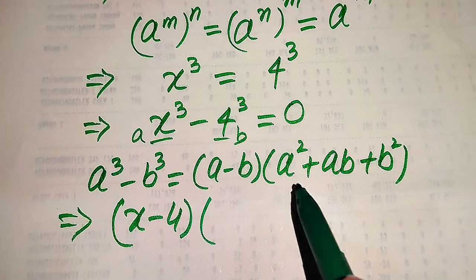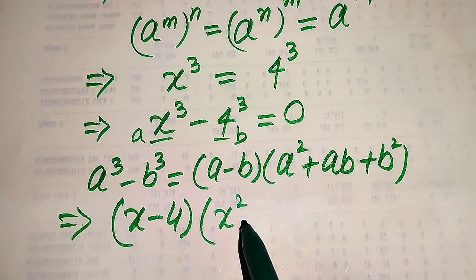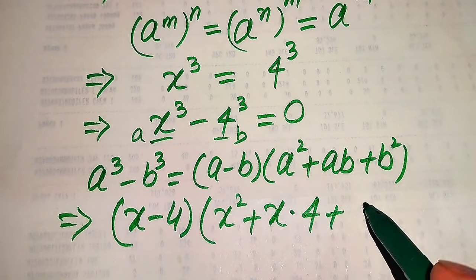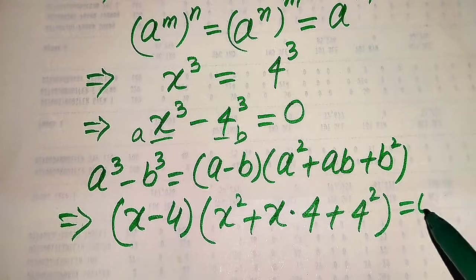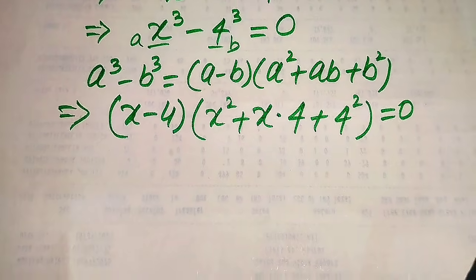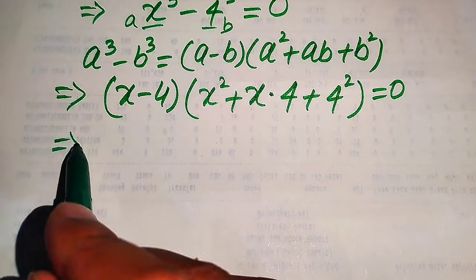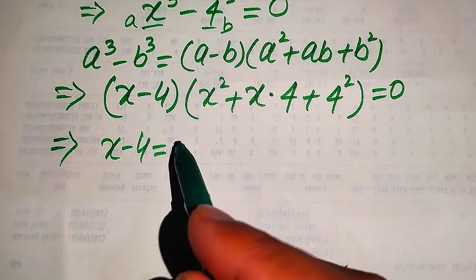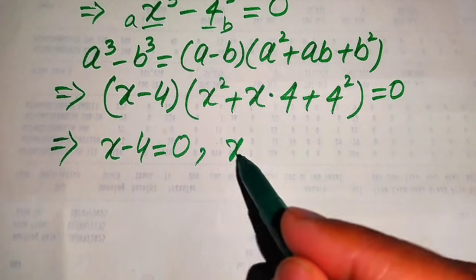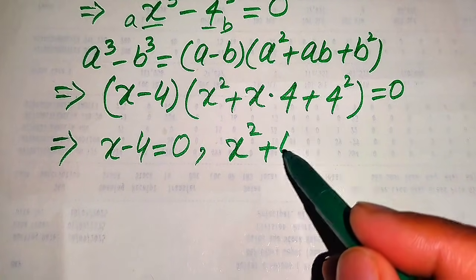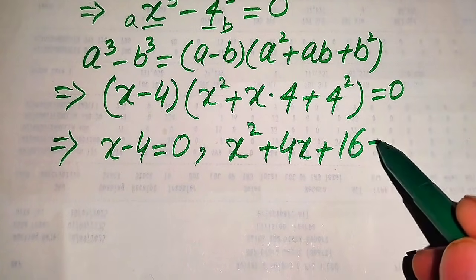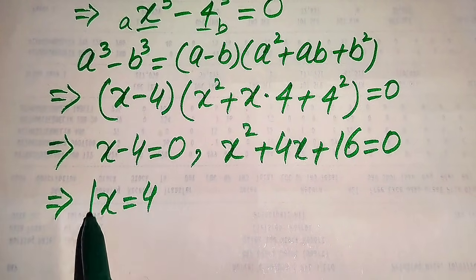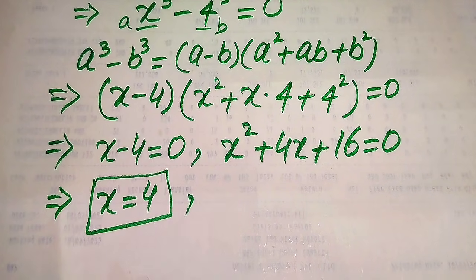After applying this formula to the equation, it becomes: (x − 4)(x² + 4x + 16) = 0. We now divide this into two cases. The first case gives x − 4 = 0, so x = 4. This is the first root of the given equation.